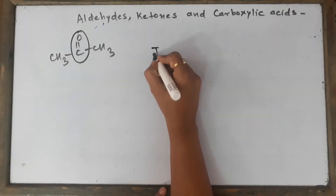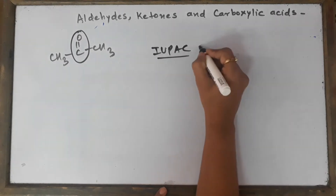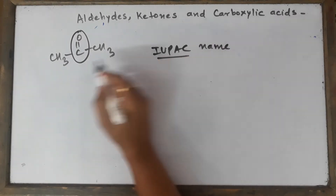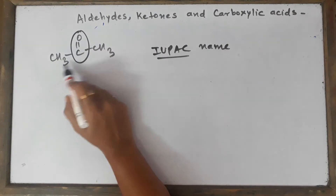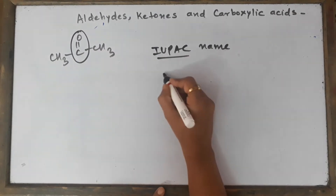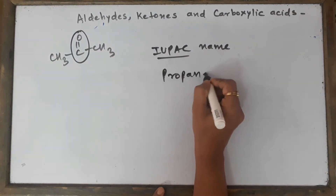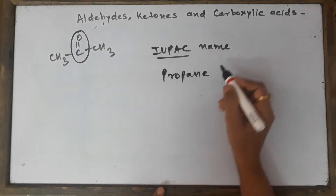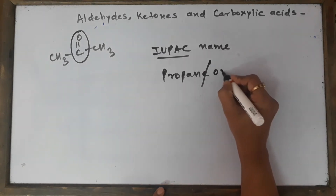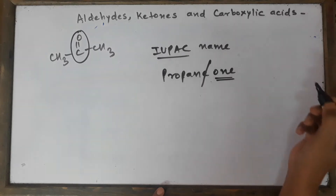First, I will tell you what is the IUPAC name. For the IUPAC name of this compound, you have to see how many carbon atoms are there. Since we can see here there are three carbon atoms, we will call it as propanone because it's a derivative of propane — just knock out the E and write the suffix '-one'.